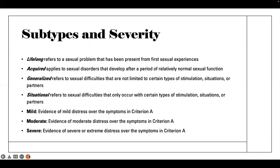Within the sexual dysfunctions there are multiple subtypes and severity. Make sure when doing your historical assessment that you're asking how long this has been happening. Lifelong is when the sexual problem has been present since the first sexual experience. Acquired is when the disorder develops over a period of relatively normal sexual functioning. Generalized is when sexual difficulties are not limited to certain types of stimulation, situations, or partners. Situational refers to difficulties that only occur with certain types of stimulation, situations, or partners.